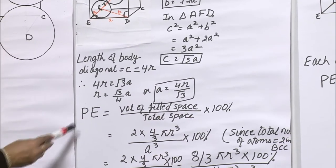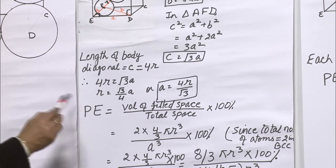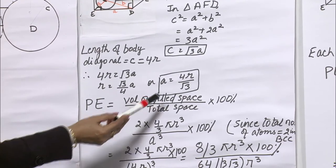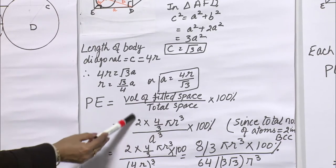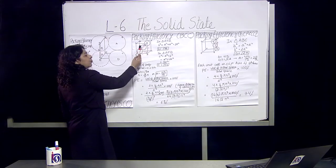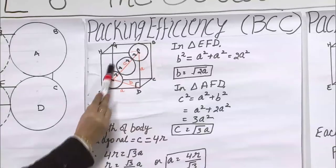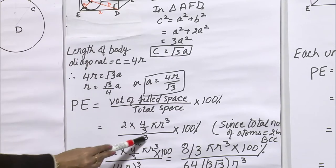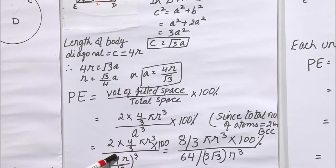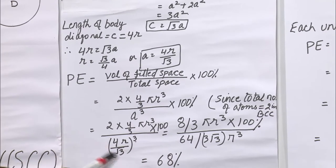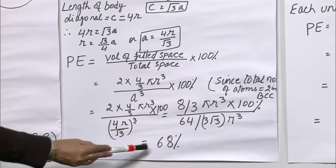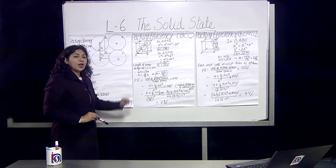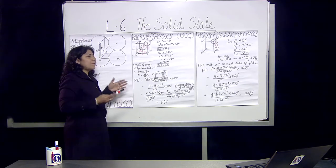Let us put this into the formula. Packing efficiency equals the volume of filled space divided by total space. In a body-centered cubic cell there are 2 atoms, so the numerator is 2 × (4/3)πR³. The denominator is A³ = (4R/√3)³. Solving this equation we get 68%. Comparing: simple cubic is 52.4%, and body-centered cubic is 68%, meaning the BCC solid is more efficient in packing.